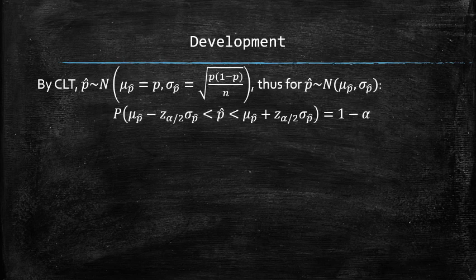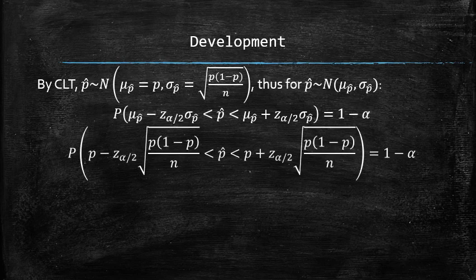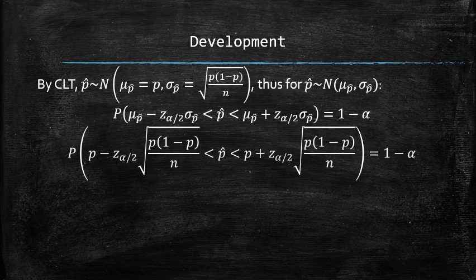The probability of p hat being within z alpha over 2 standard deviations away from the mean is equal to 1 minus alpha. By plugging in the values into these expressions, we can obtain the following probability statement.